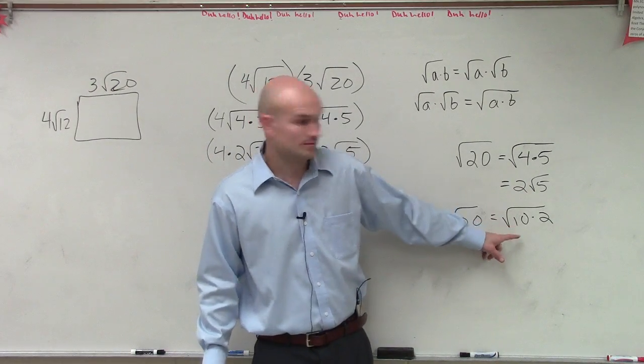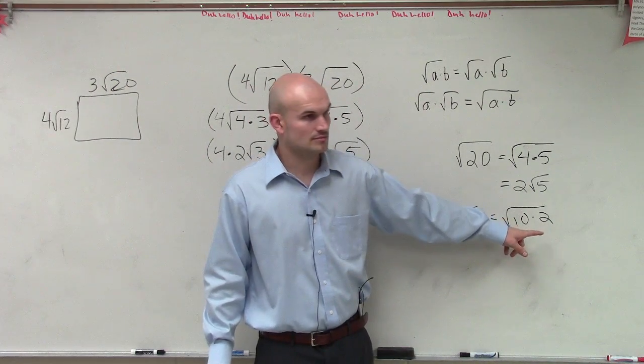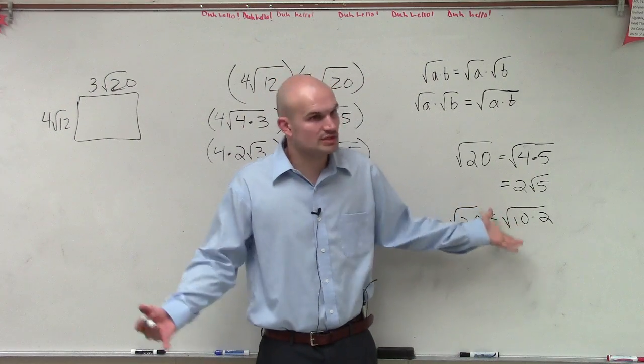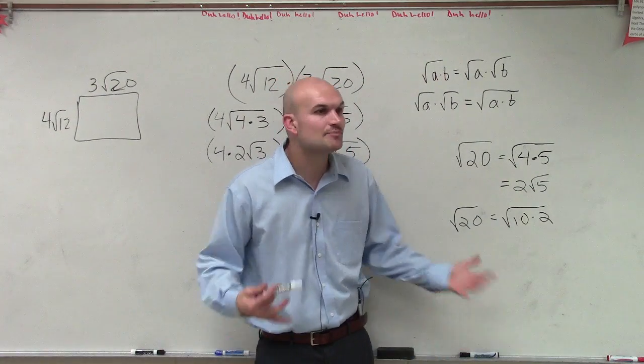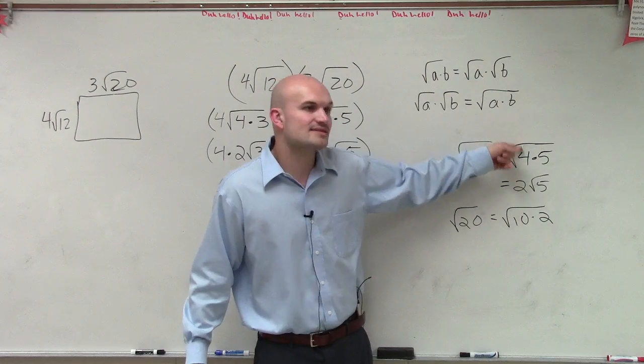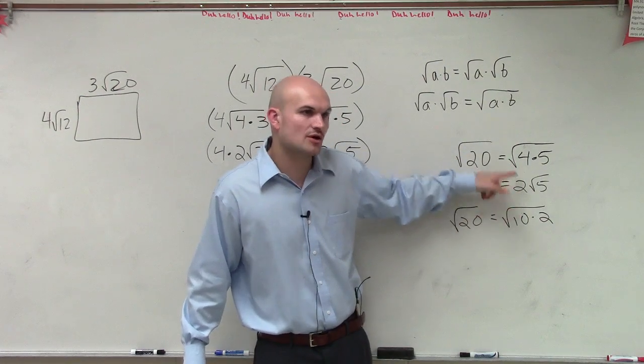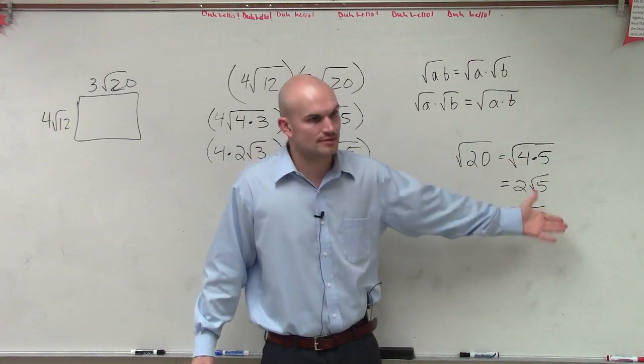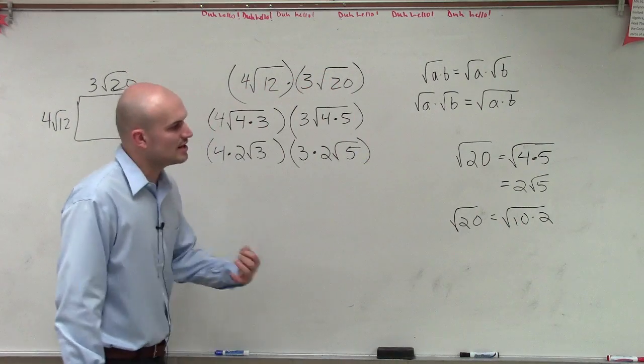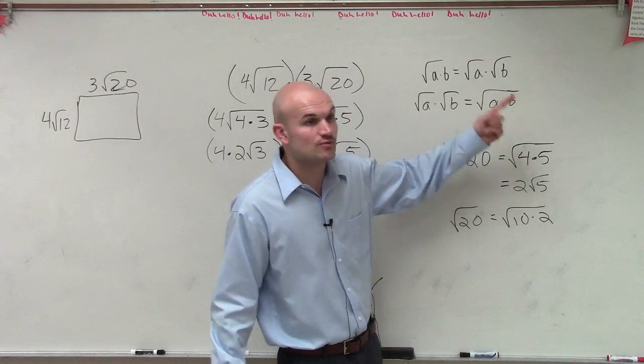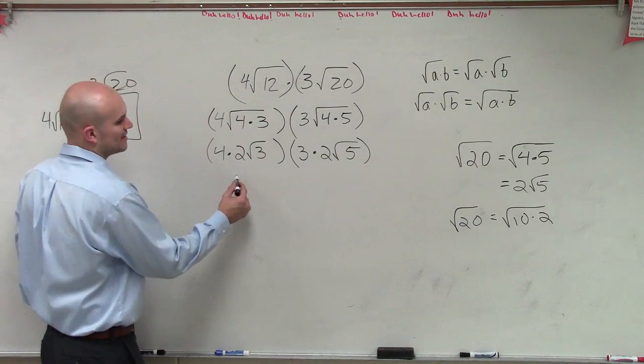Now, the problem with writing it as 10 times 2, do we know the square root of 10? No. Do we know the square root of 2? No. So guess what? It's the same answer, right? We can't simplify it. Here, we can simplify the square root of 4 down to 2. So this is a more simplified answer. That's why you always want to pick divisors that at least one of them is a square number.